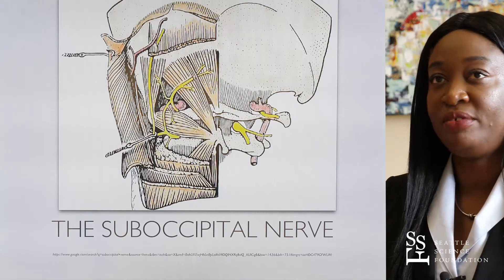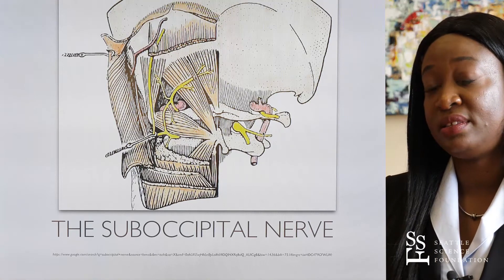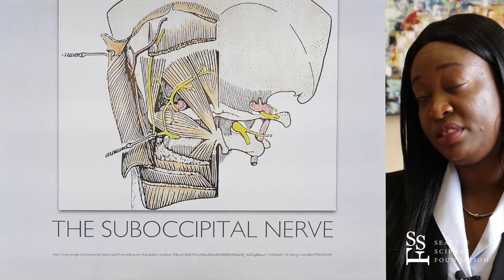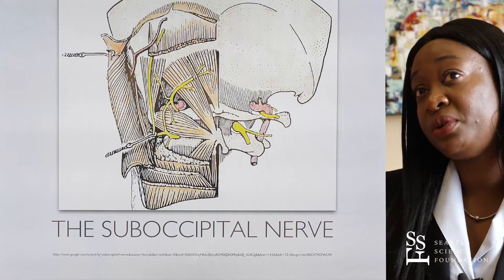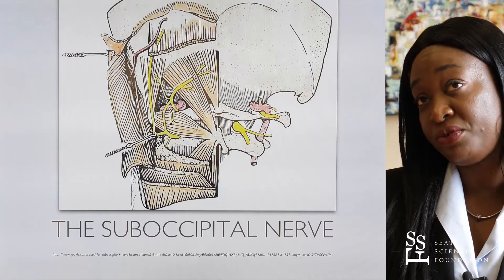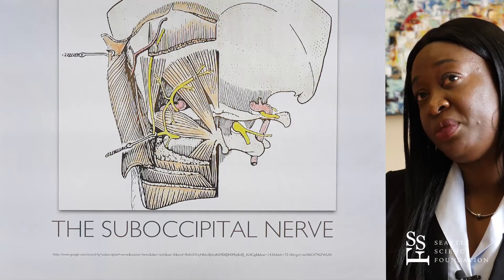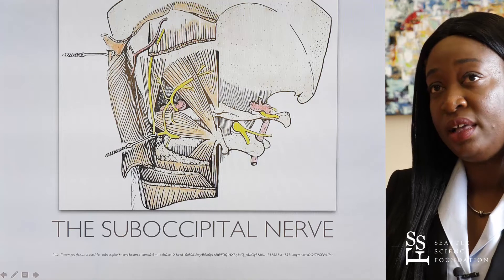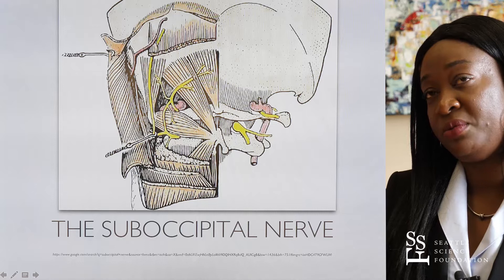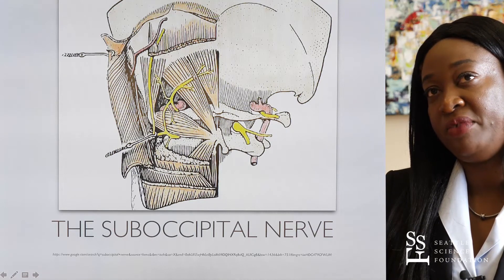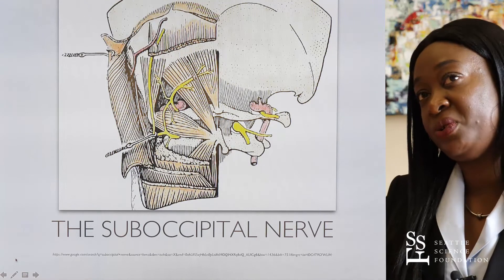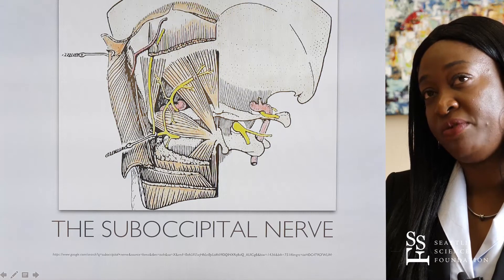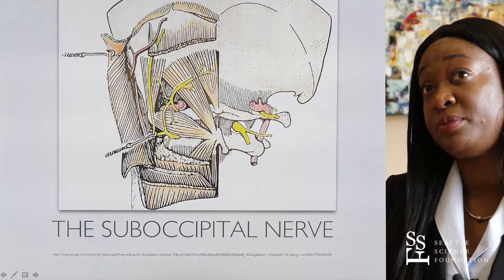The suboccipital nerve is formed from the dorsal rami of the first cervical spinal segment. Unlike other spinal nerves where the ventral rami is typically larger than the dorsal rami, for the suboccipital nerve the dorsal rami is larger than the ventral rami. As it emerges from the vertebral canal, it courses over the posterior arch of the atlas and is usually found inferior to the vertebral artery. It emerges at the window of the suboccipital triangle, where it innervates the rectus capitis and obliquus capitis superior and inferior, and also supplies motor innervation to the semispinalis capitis.